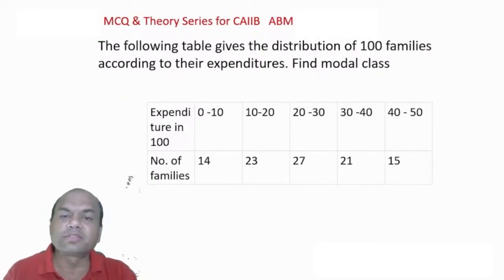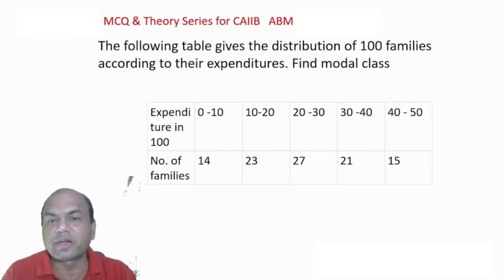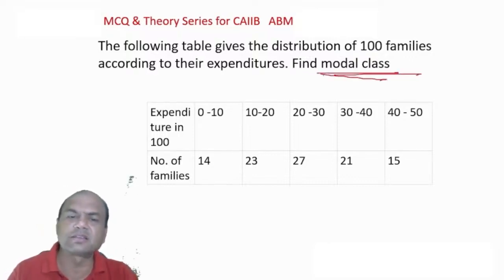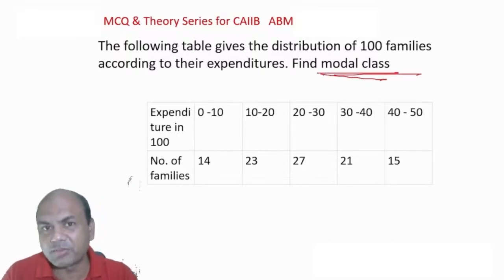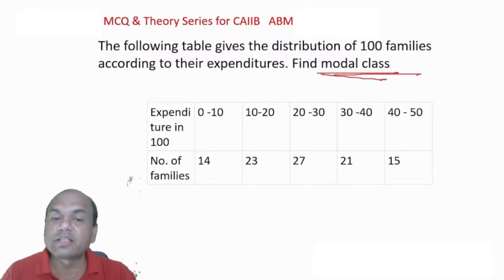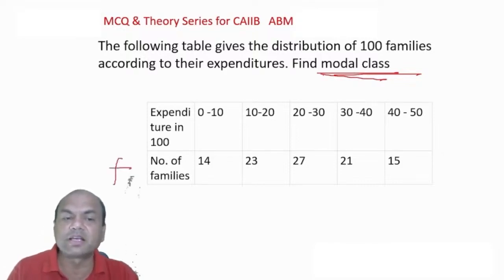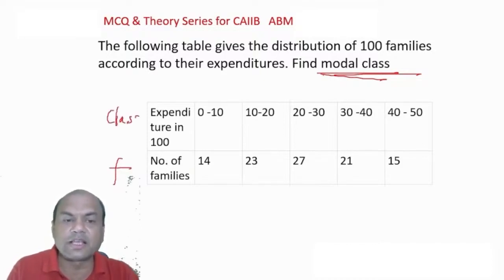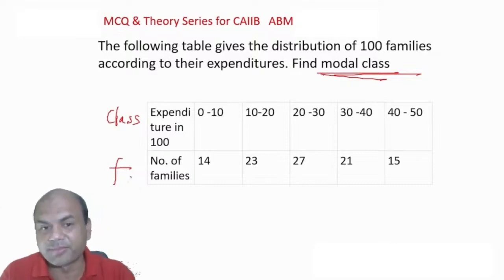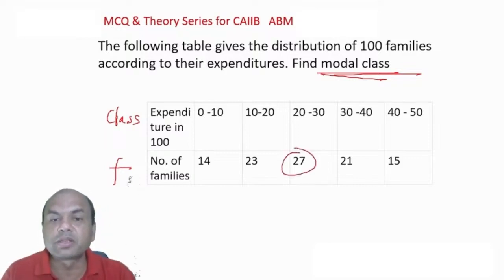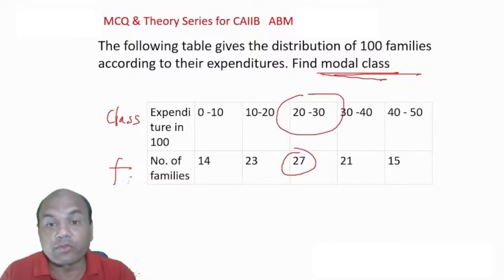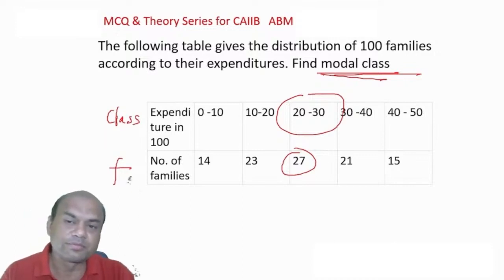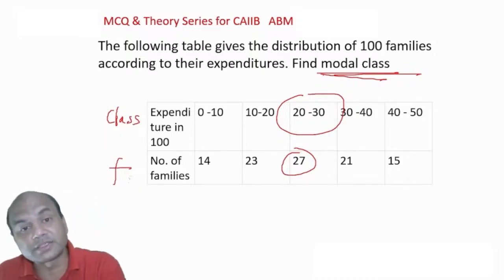Following table gives the distribution of 100 families according to expenditure — find the modal class. Modal means that class which has the highest frequency. The number of families (frequency) column — the highest value here is 27 — so that class is the modal class (expenditure class 20-30). To find the actual mode value, there is a separate formula which requires joining the paid class.